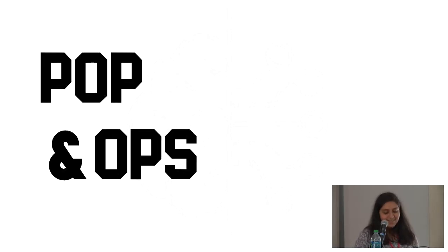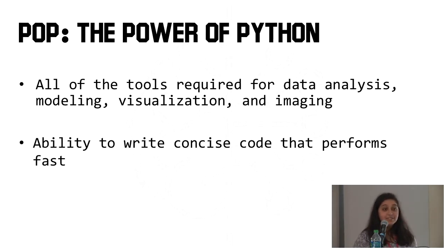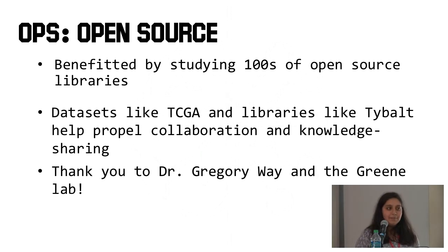So finally, POP and OPS. POP is the power of Python. I spent a lot of time talking about the biology, but obviously none of the project could have been done without Python. All of the tools required for data analysis, modeling, visualization, and imaging are all within Python, which makes it really powerful. And the ability to write concise code. It's not pages and pages long. Concise code that performs fast is really, really powerful. And OPS, the idea of open source. I benefited, obviously, in this project by sending hundreds of open source libraries and data sets like the Cancer Genome Atlas and libraries like Tybalt from labs at UPenn and other places help propel collaboration and knowledge sharing, which is really important. So thank you to Dr. Gregory Wei, whose data set and original project that is, and the Green Lab, whose paper that is.